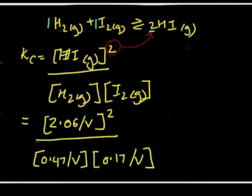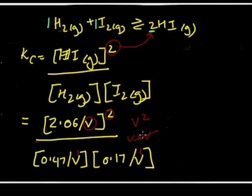Notice that we have two volume units in the numerator (V squared) and two volume units in the denominator (V times V), so they cancel out. Hence it doesn't matter that we weren't given the value of V, because the volumes cancel in the equilibrium equation.